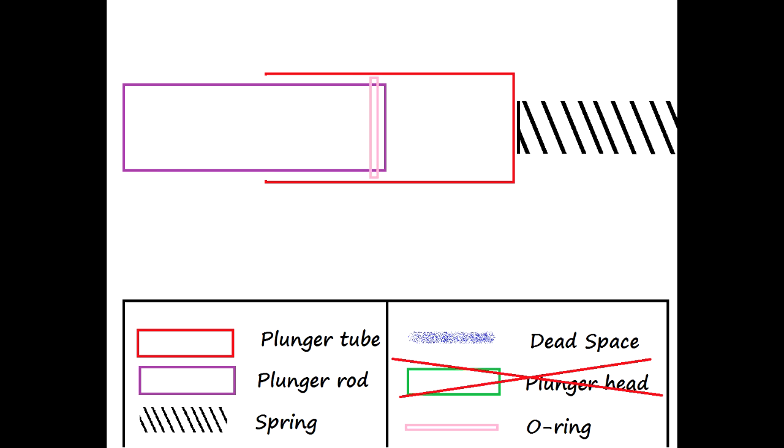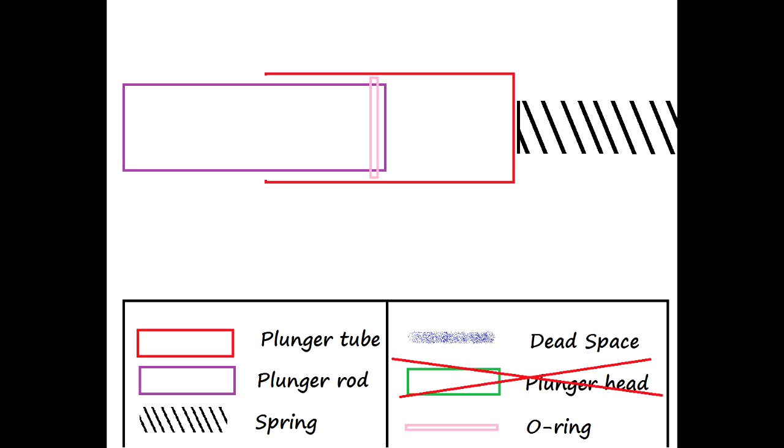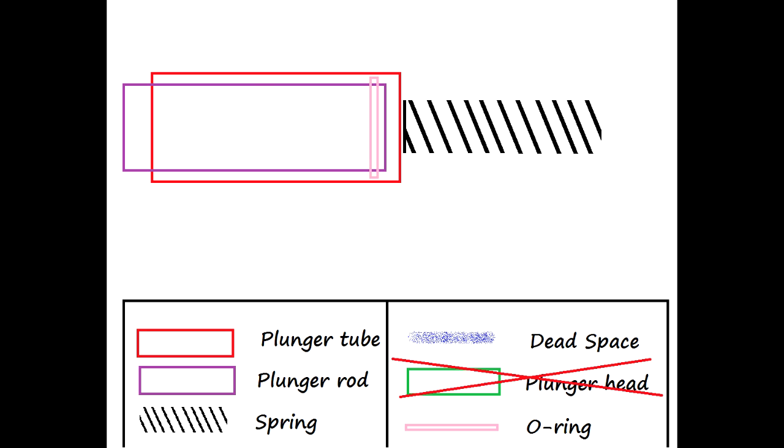When this system is primed, the plunger tube itself actually moves back which compresses the spring. When the trigger is pulled, the plunger tube advances which moves into the o-ring and creates pressure which is released out of the barrel, propelling the dart. The air is being pushed out of the left side in this particular diagram.